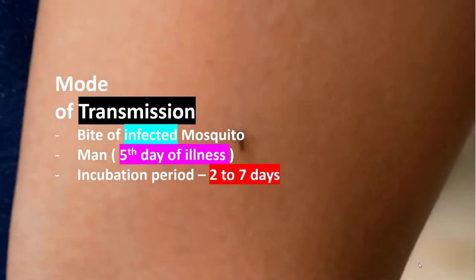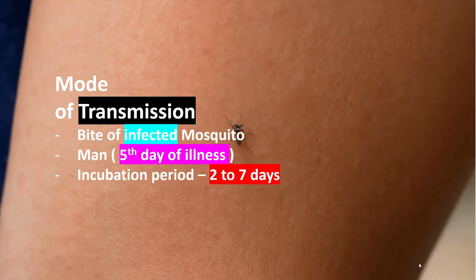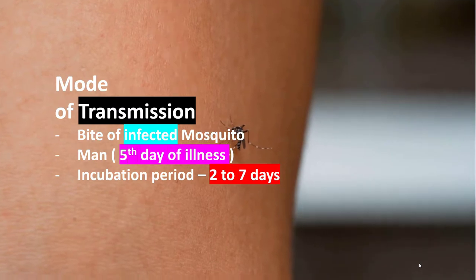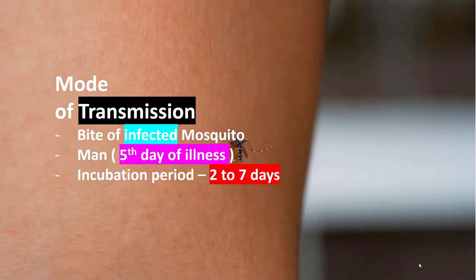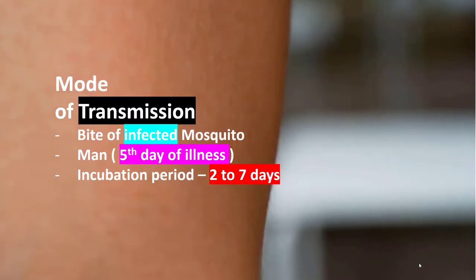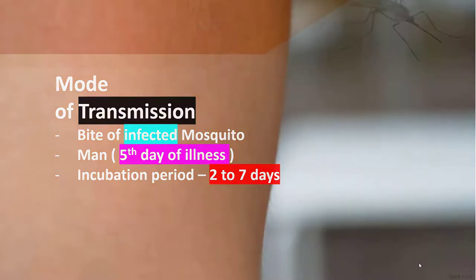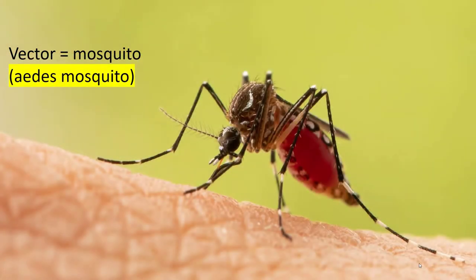This disease is transmitted by the bite of an infected Aedes mosquito. The Aedes mosquito becomes infective by feeding on a patient suffering from dengue. A person becomes infective from the fifth day of illness, and the incubation period for this disease is two to seven days. These mosquitoes lay eggs in clean water during the end of the rainy season.